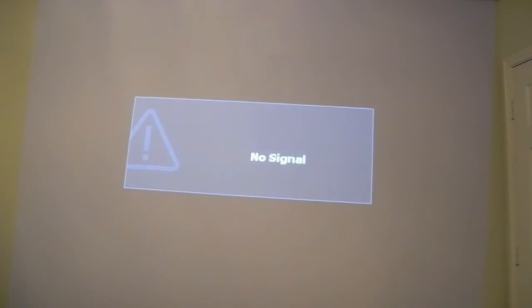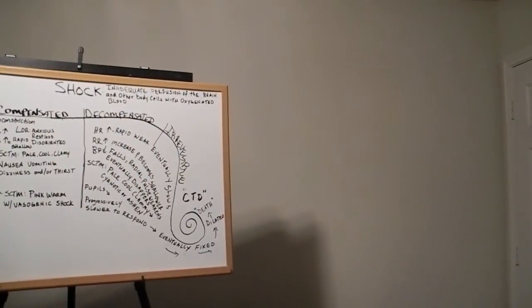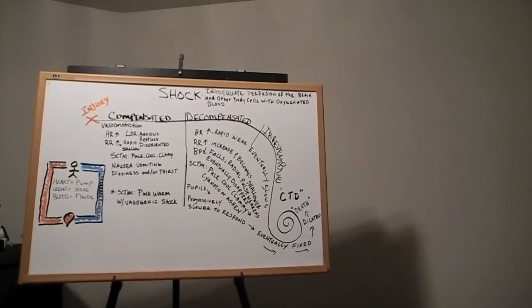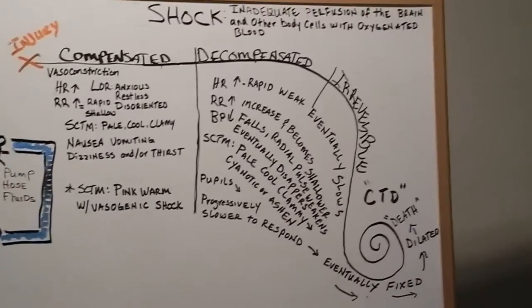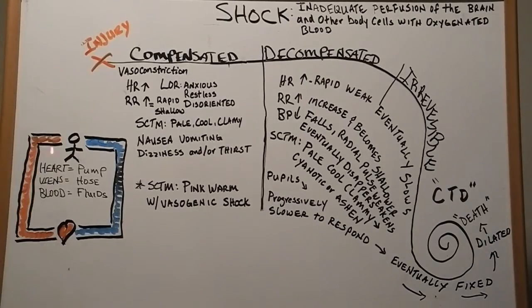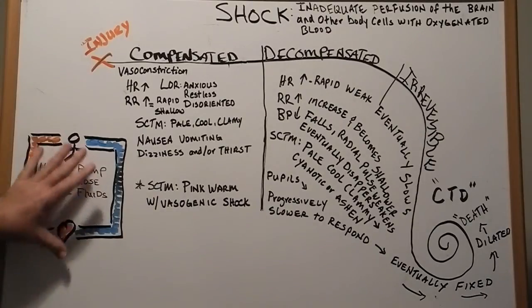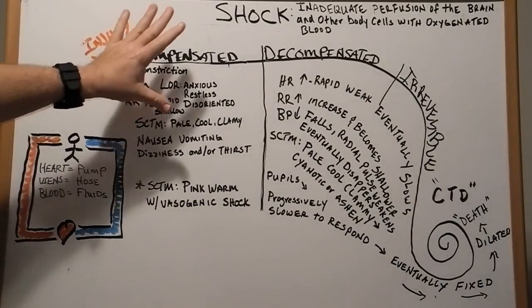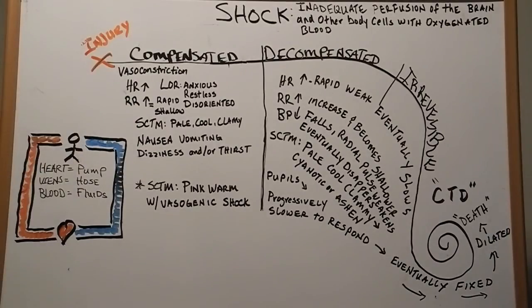Now what I want to talk about is the whiteboard. Make sure you can see it here. This is going to help you understand a little more. I talked earlier about the heart as being a machine. What I've drawn here is our body in the circuit — here's a body, here's a heart. The heart is the pump, our veins are the hoses, and blood is the fluid. At any time, if we have an issue with this mechanical system, we come into our stages of shock.